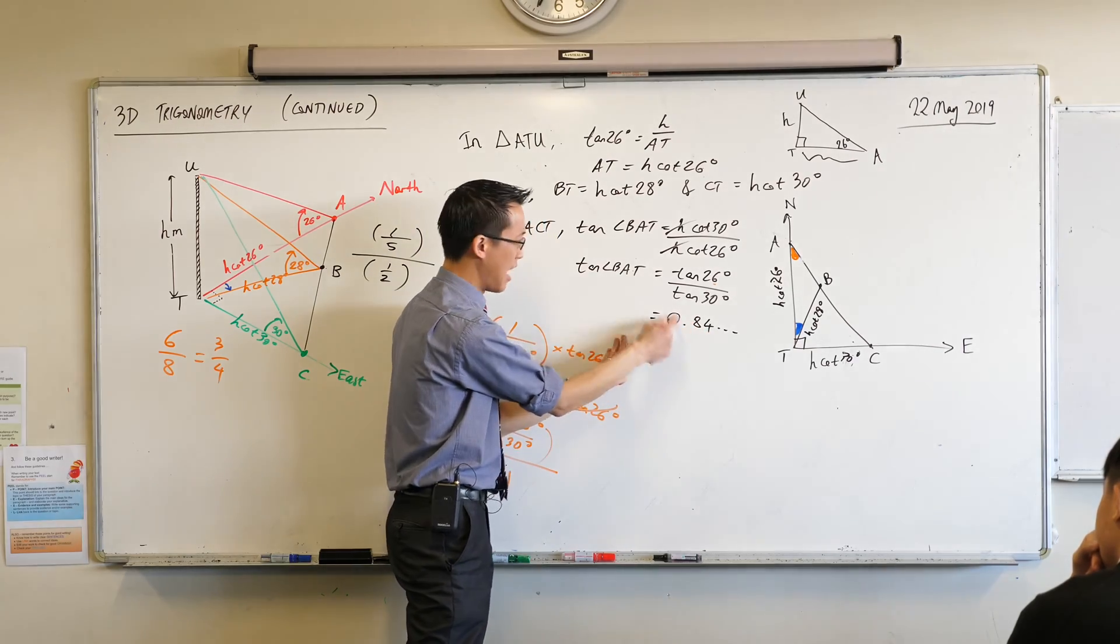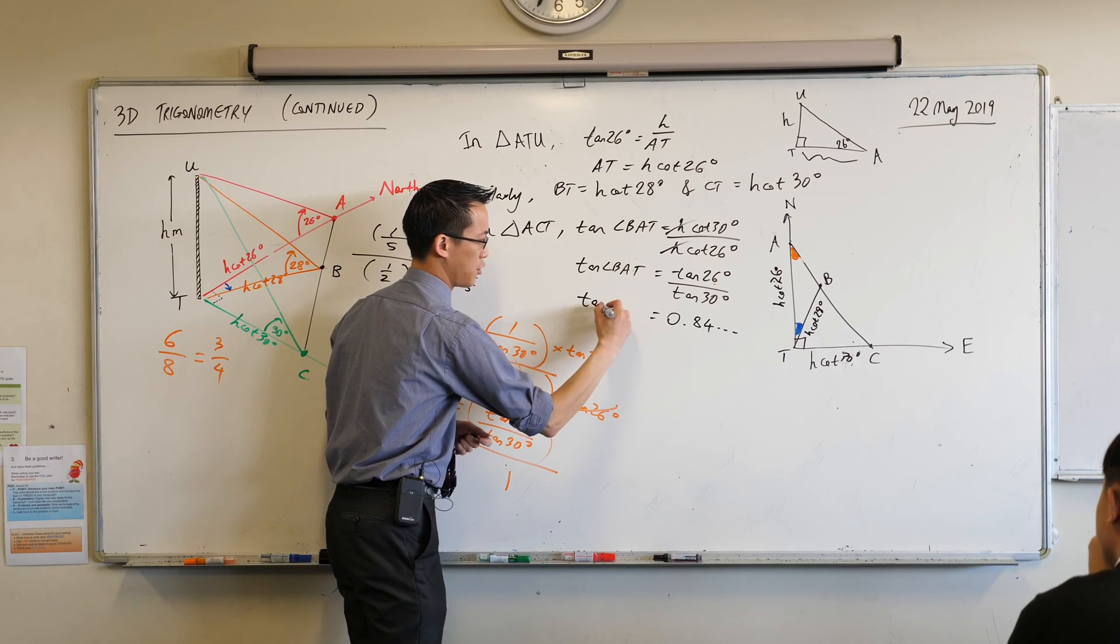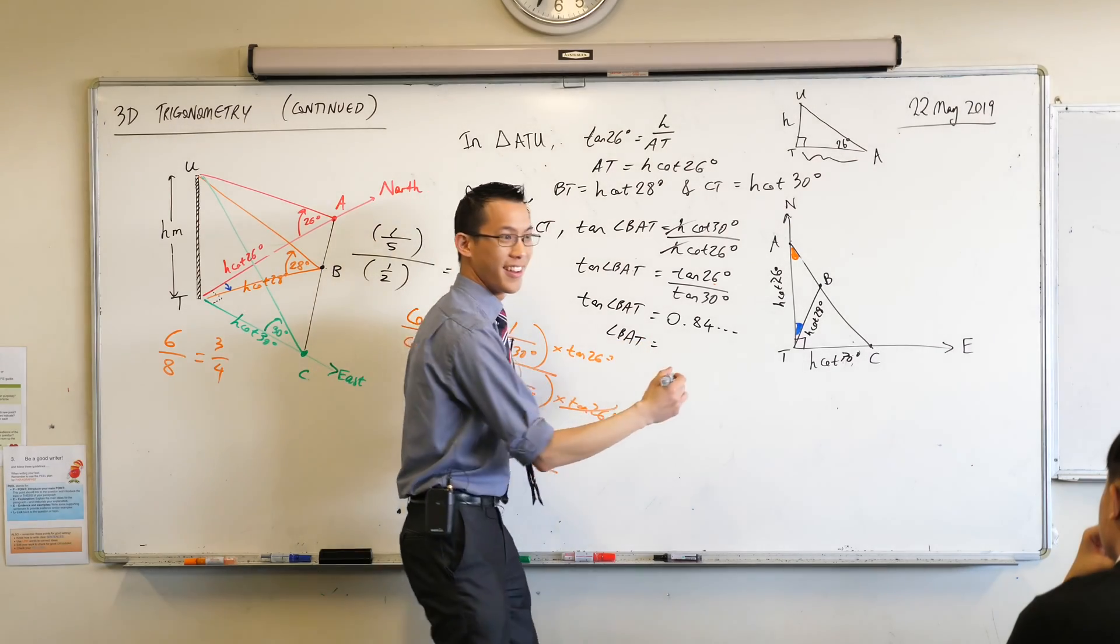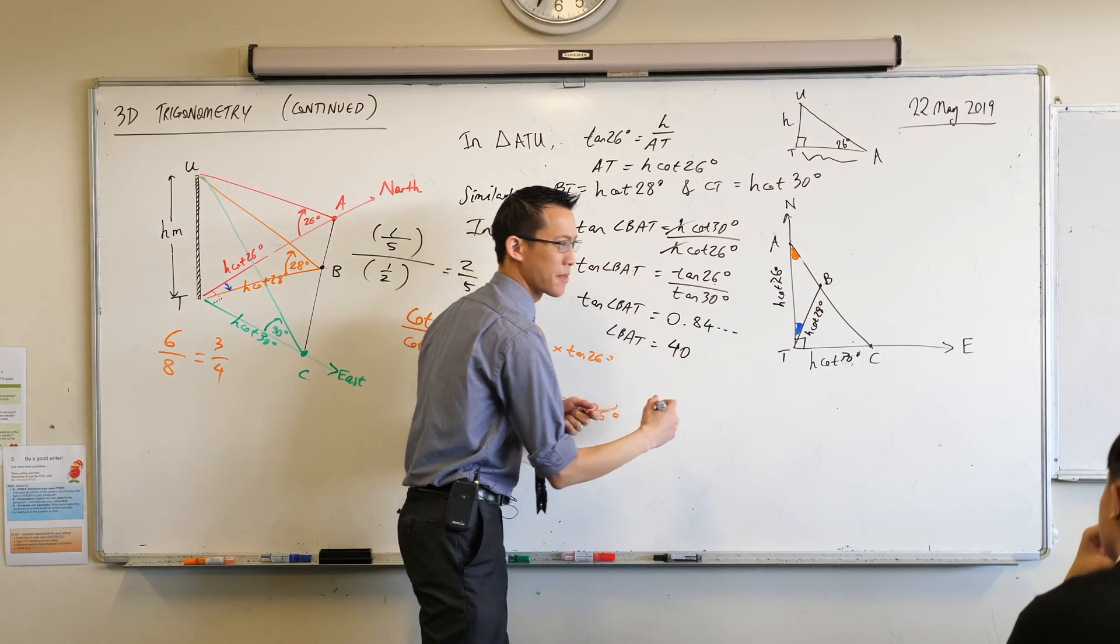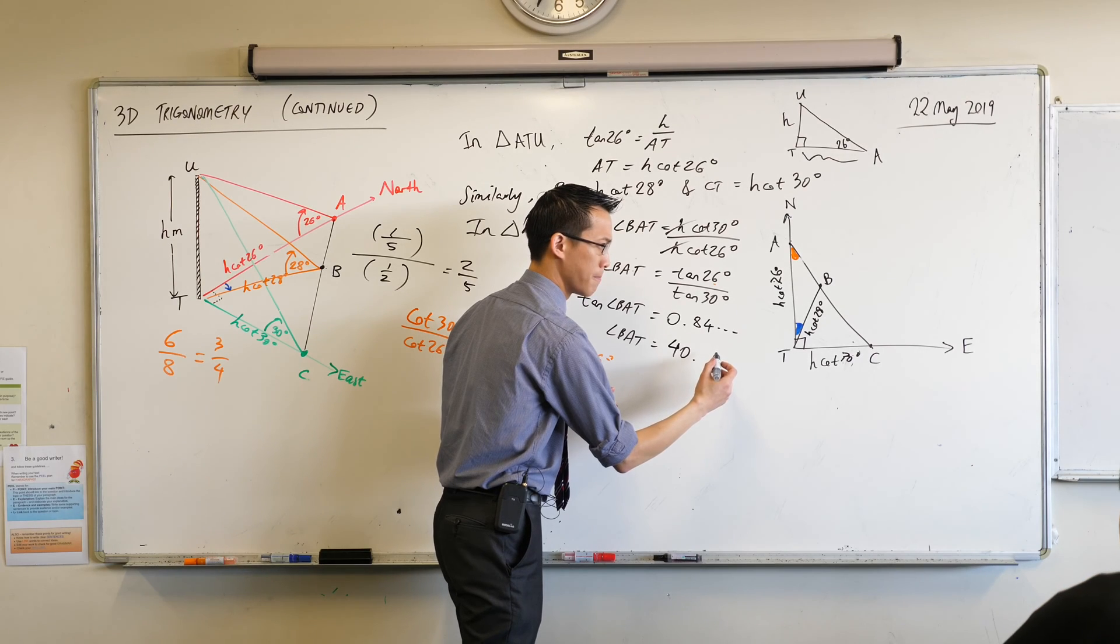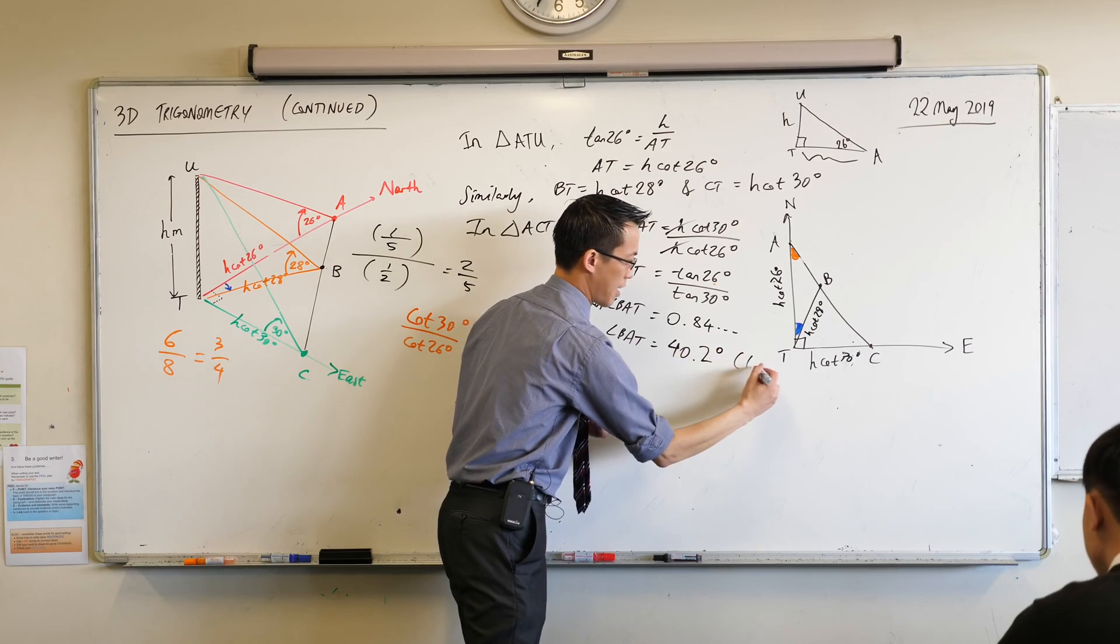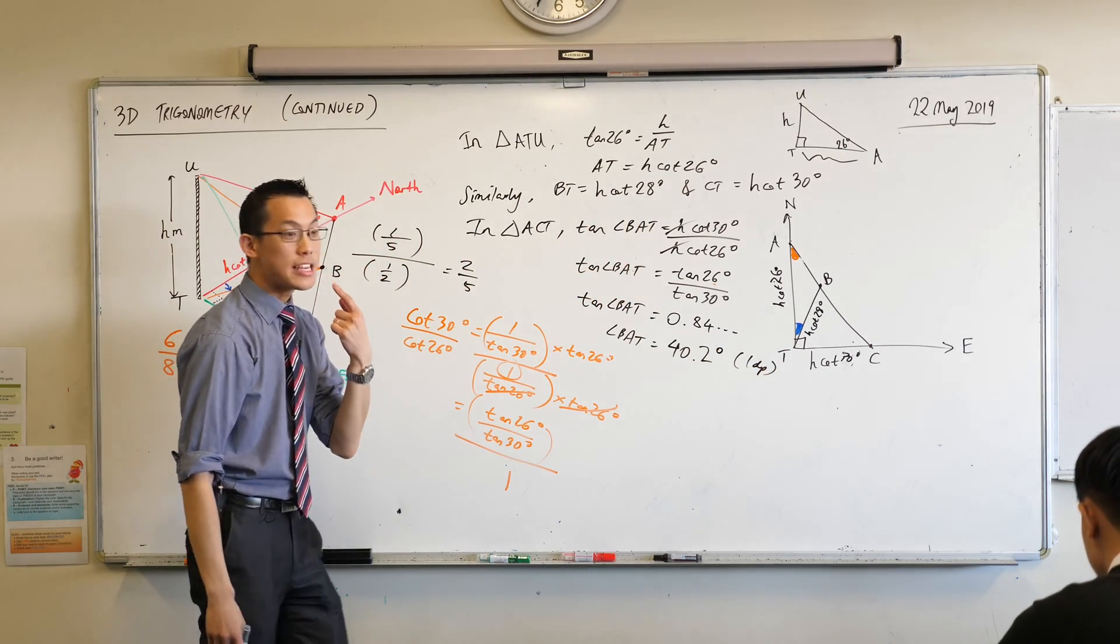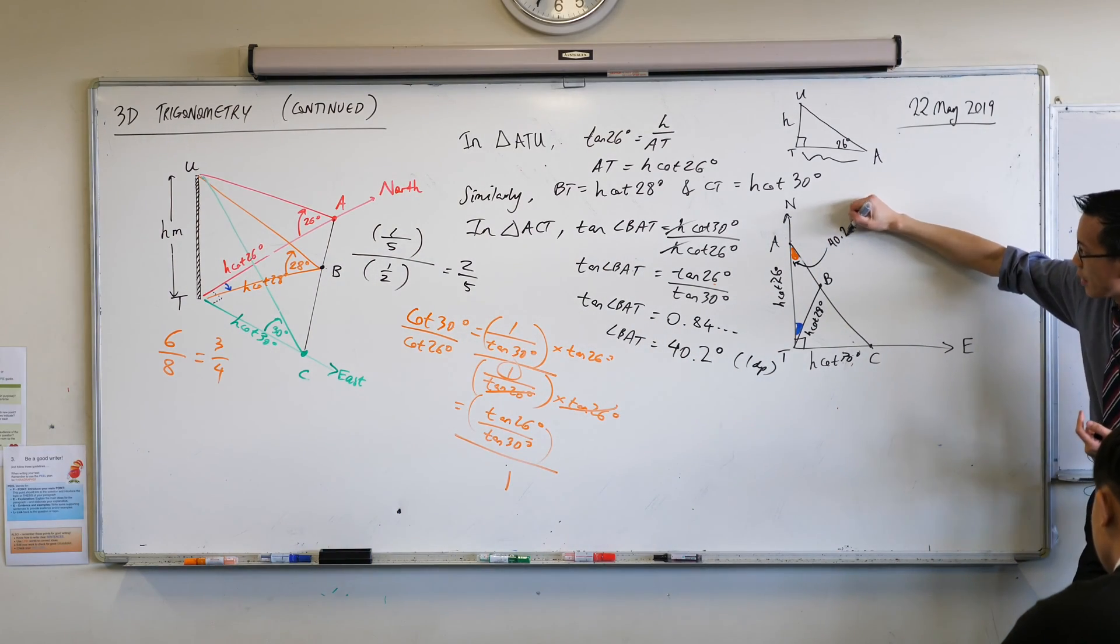But I don't actually want that. I just want the angle itself. Can someone tell me what the actual angle is? You're going to have to do shift tan. Who's got it? 40 degrees. Can I get some decimal places on that? Maybe one decimal place will do. I think it's like 40.2 or something. Let's just call it that. So what have I got here? This is the orange angle in here. This guy. 40.2 degrees.